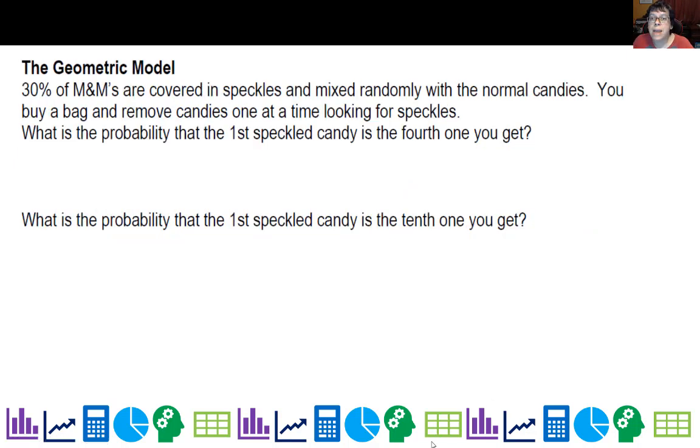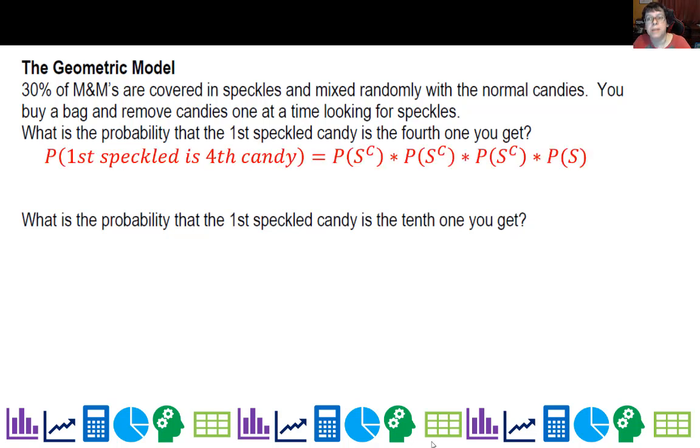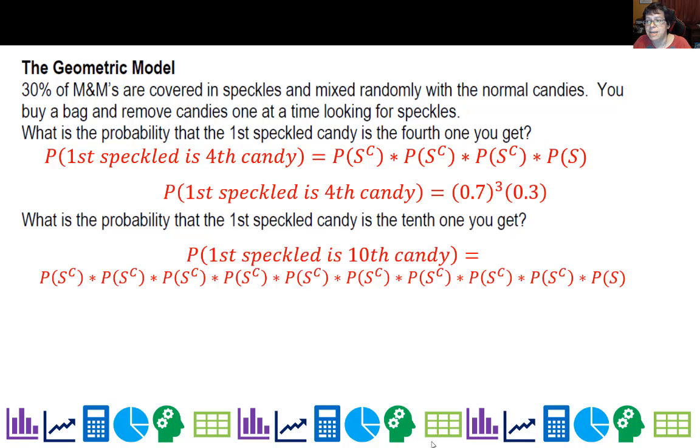Now we're going to look at the geometric model. This bag of M&Ms has 30% covered in speckles. What is the probability the first speckled candy is the fourth one you get? I would multiply not speckled, not speckled, not speckled, then speckled.